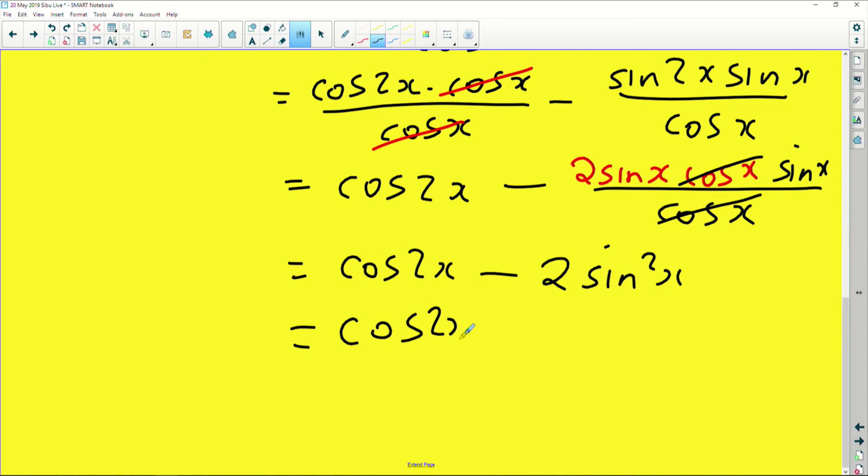Now since everything must be in terms of cos, if you look there, what we are proving only has cos and there's no sign of sine, so sine must go. So I'm going to have to do something about it. I'm going to use the squares identity. Remember, sine can be written as 1 minus cos squared x, which will simply simplify to cos 2x.